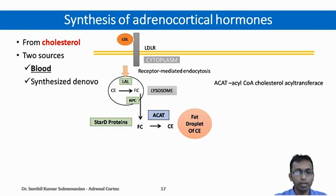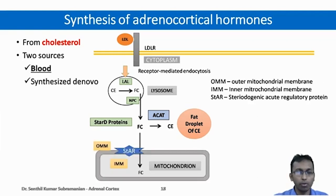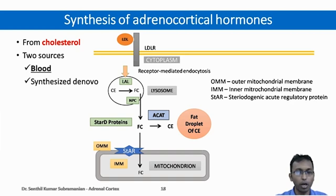The free cholesterol in the cytoplasm is carried by specific carrier proteins called StAR proteins. Further, the free cholesterol is acted upon by ACAT, that is acyl-CoA cholesterol acyltransferase. This enzyme converts the free cholesterol to cholesterol esters, which are stored in the form of fat droplets in the adrenal cortex cells. The free cholesterol can be moved into the mitochondria, where the movement from outer to inner mitochondrial membrane is done by the steroidogenic acute regulatory protein.